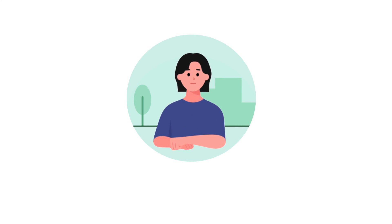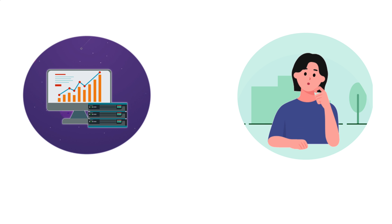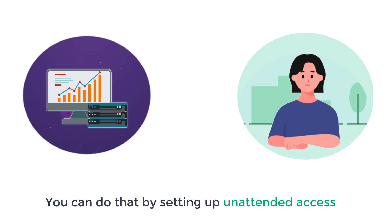Now you know how to connect to your client's PC and transfer files. Let's say you're in another place far from your computer and no one is near it. You can access your computer by setting up unattended access. To connect to your client's PC, you normally need their partner ID and password. But with unattended access, you don't need their partner ID or password — you can access the computer just by selecting it on TeamViewer and connect from anywhere, even if no one is near the PC.